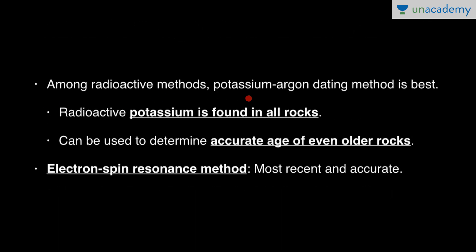Among radioactive methods, potassium-argon dating is the best method. Although many people assume carbon-14 is the best because it is widely known, the actual answer is potassium-argon. The reason is that radioactive potassium is found in all rocks, so it can be used to determine the accurate age of even very old rocks, given its half-life of 1.3 × 10⁹ years. The electron spin resonance method is the most recent and accurate method, and nowadays it is used to determine the age of rocks.